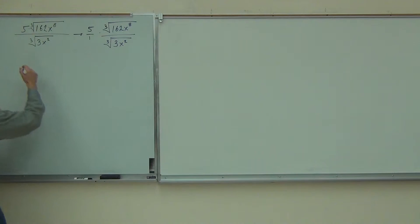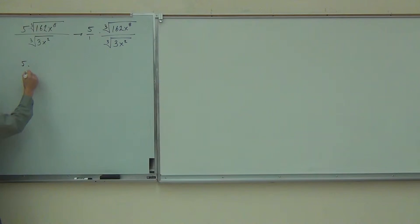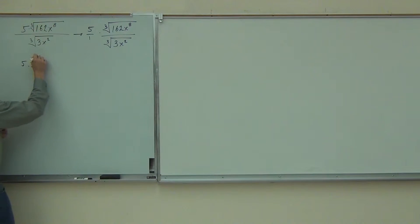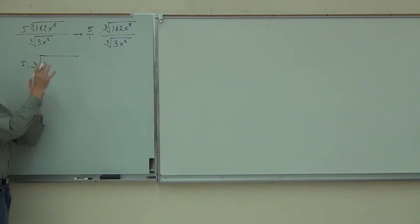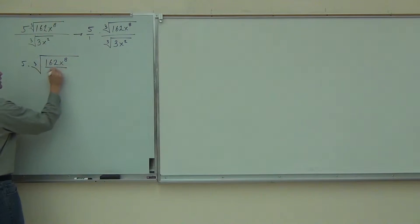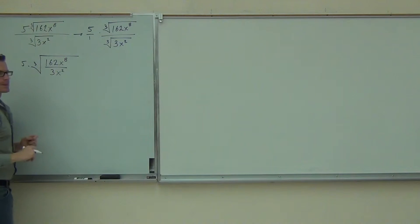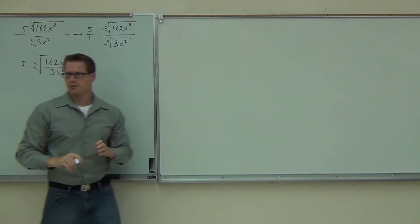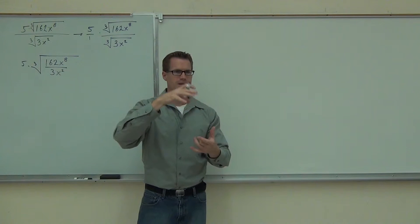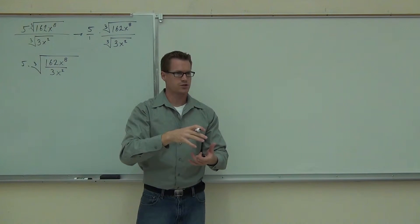So the very first thing we're going to do: we're going to leave this 5 alone — 5 times — and we're going to make this one radical. We're still going to have a cube root; that doesn't change. But inside of our cube root, we're going to have 162x to the 8th over 3x squared. Make that one root first.